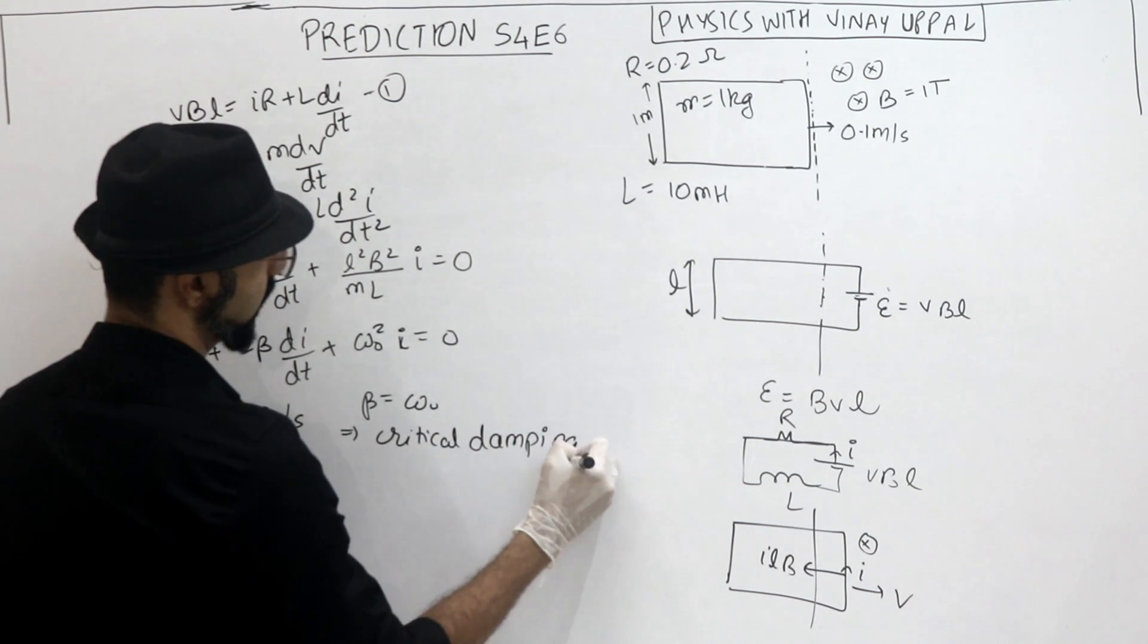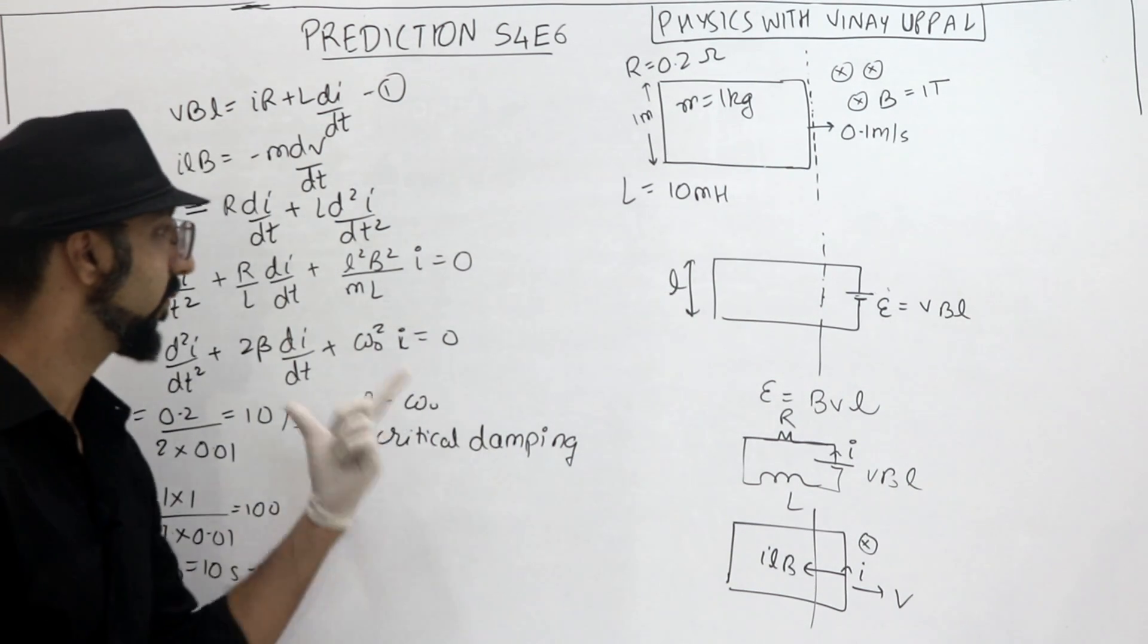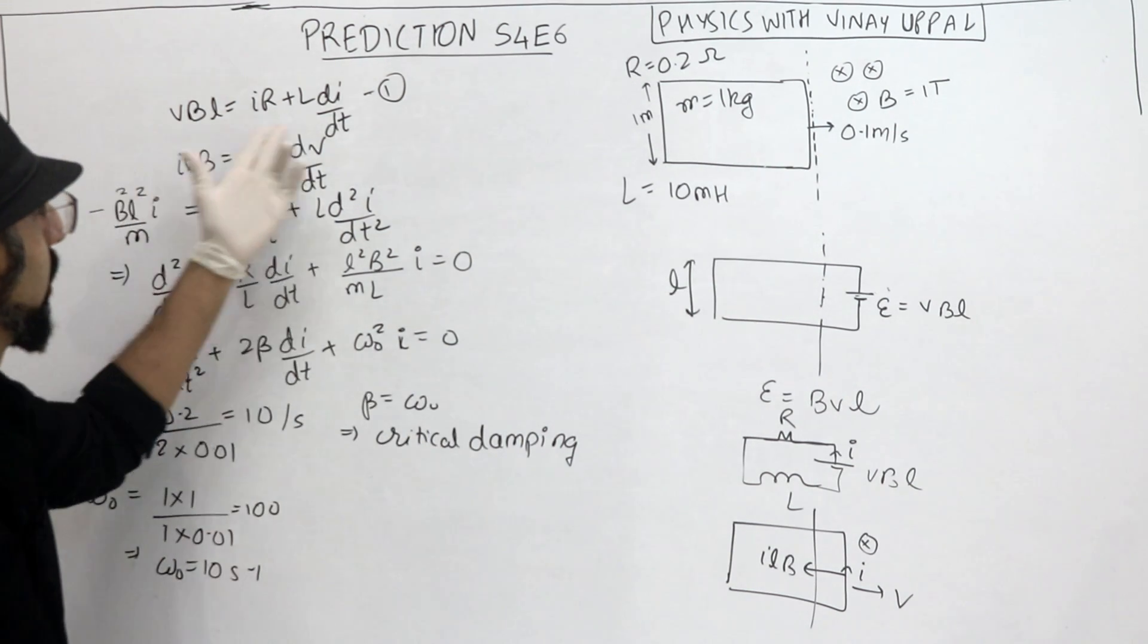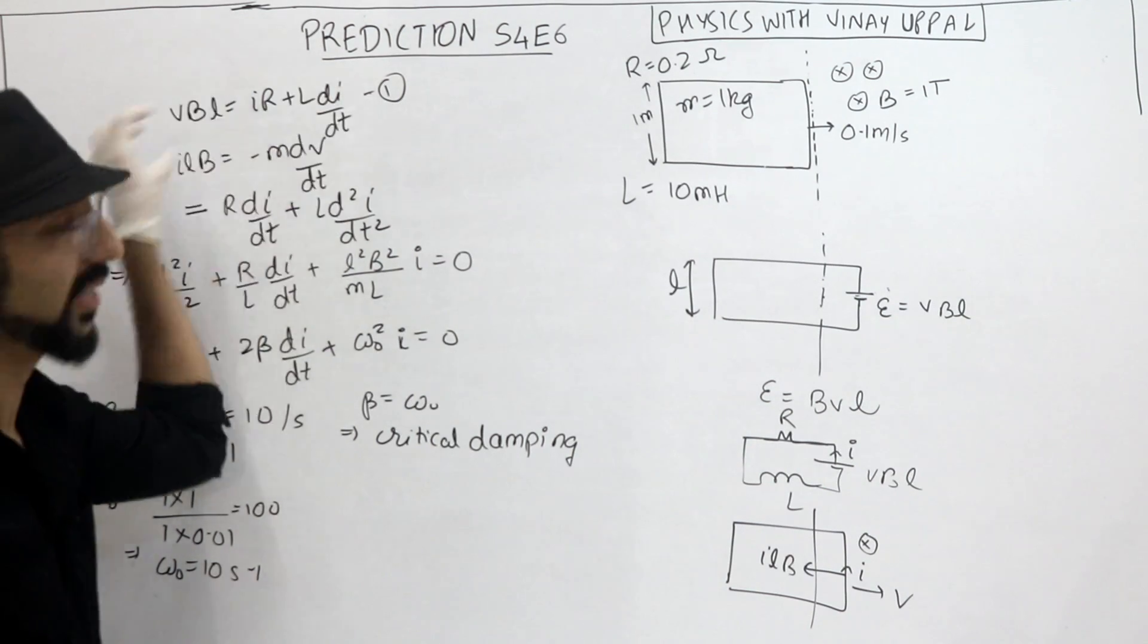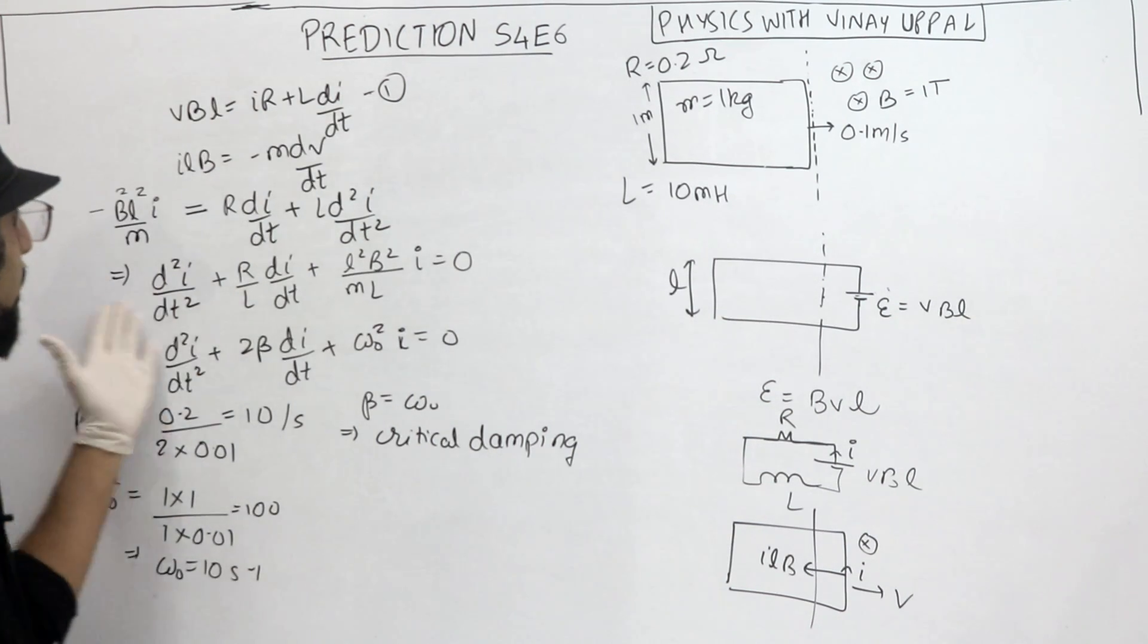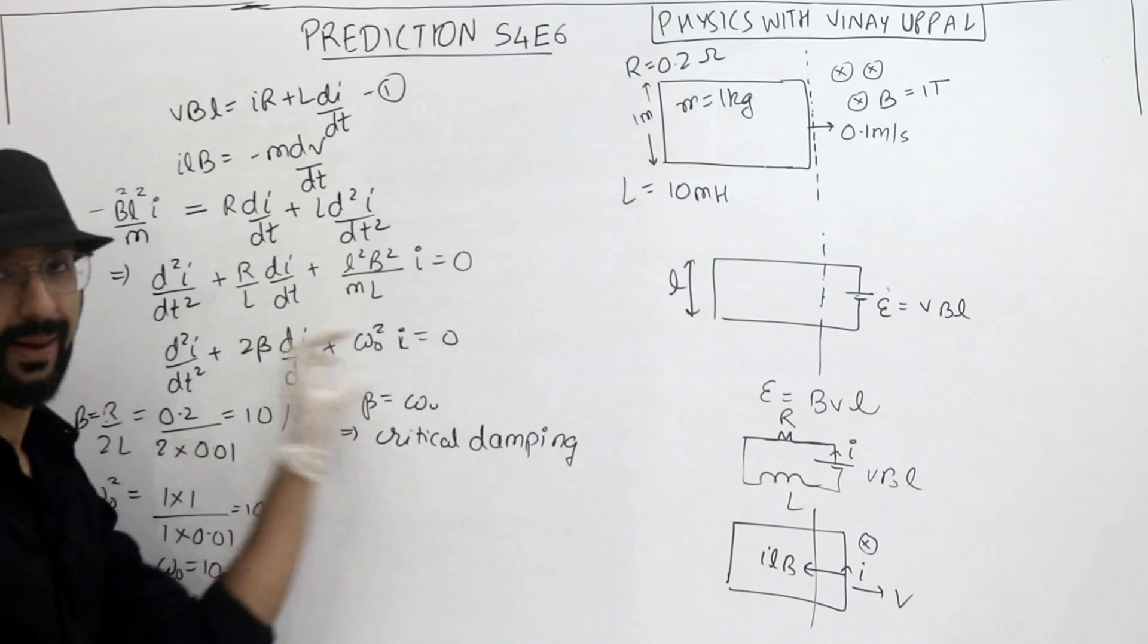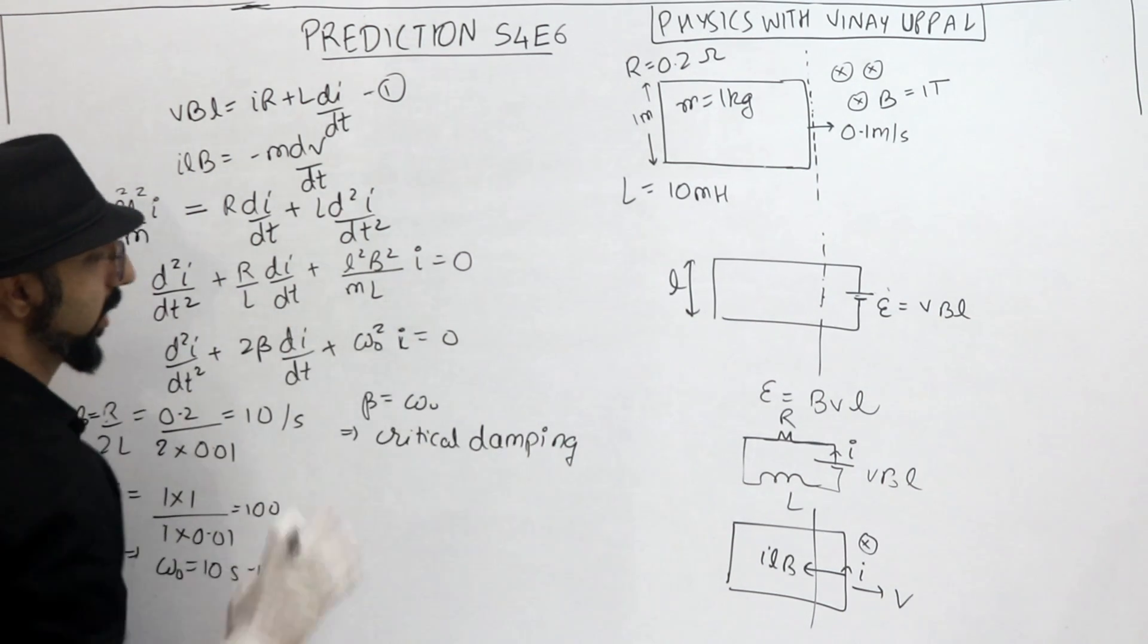Alright. So ye basics, if you know, of damped oscillations chapter, then this is a very straightforward problem. I have just written the usual circuit equation and force equation. These are standard from EMI chapter. Okay? And just eliminate it, current differential equation. Now you just have to compare it with the standard damping equation. Okay, then critical damping is done.